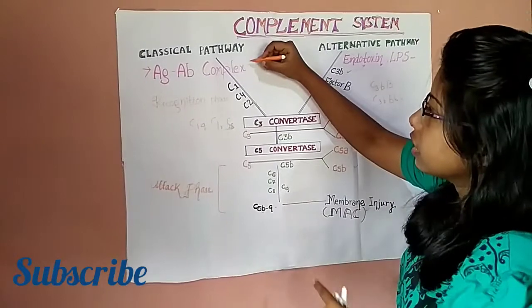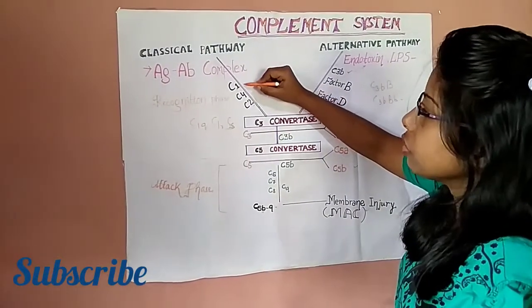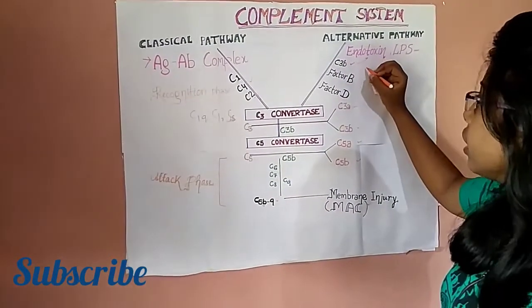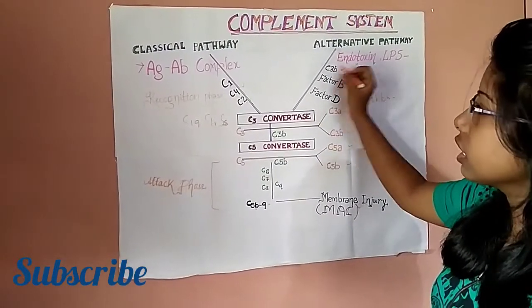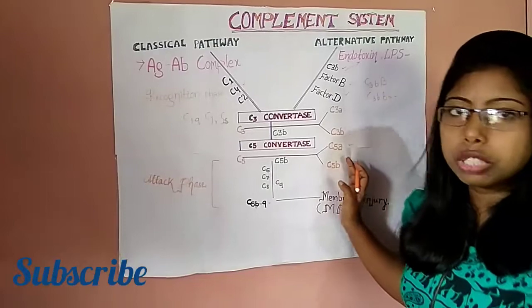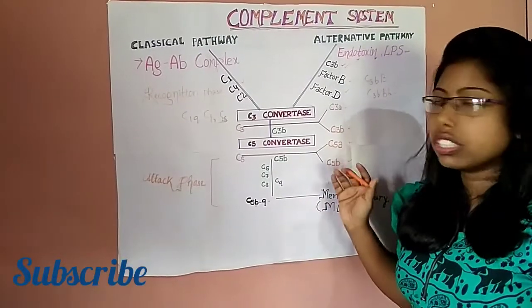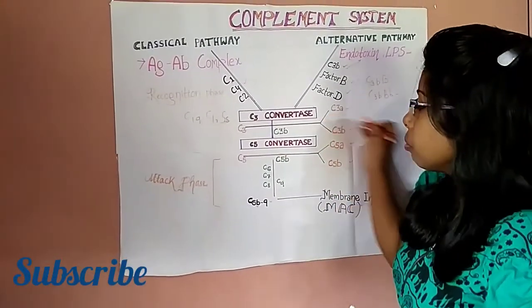But in classical pathway, only C1, C4, C2 is required. But in alternative pathway, C3B, factor B, factor D is required. Only this is the difference between classical pathway and alternative pathway. Both of these are similar from C3 convertase to membrane attack complex.